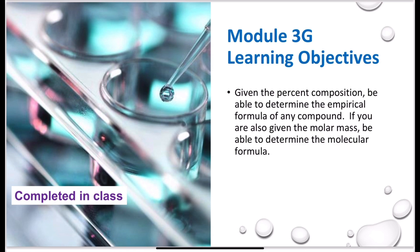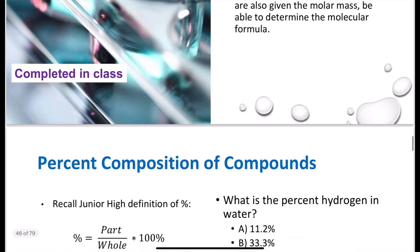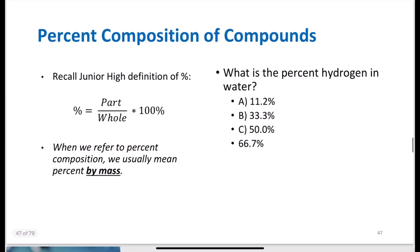First off, let's look at what we mean by percent composition. Recall your junior high definition of percent: percent is the part divided by the whole times 100%. If I want to know how many people are wearing a black t-shirt in a classroom, I would count how many people are wearing black, divide by the total number of students, and multiply by 100%.